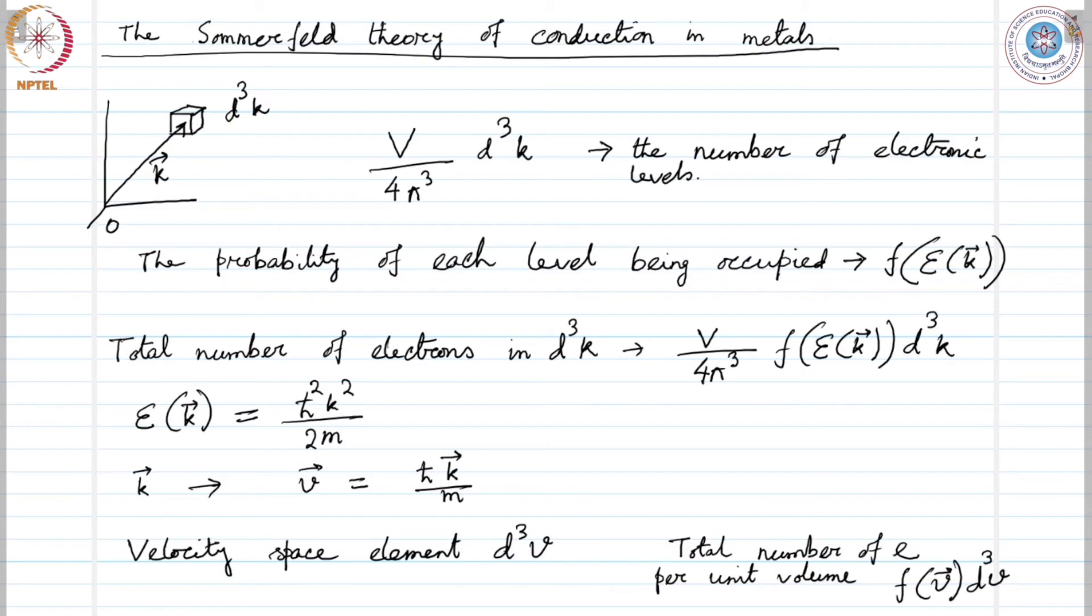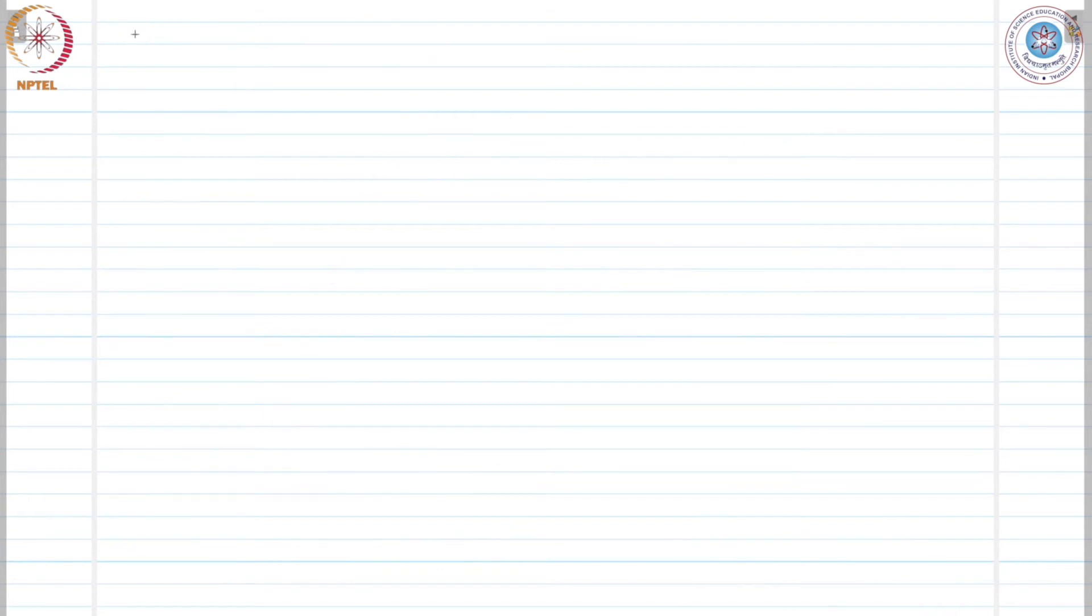We have written the Fermi function for velocity distribution. What is the velocity distribution function? F(V) this quantity can be obtained to be m over h cross cubed over 4 pi cubed then 1 over exponential of half m V squared minus the chemical potential over kB T plus 1. This is the velocity distribution function.